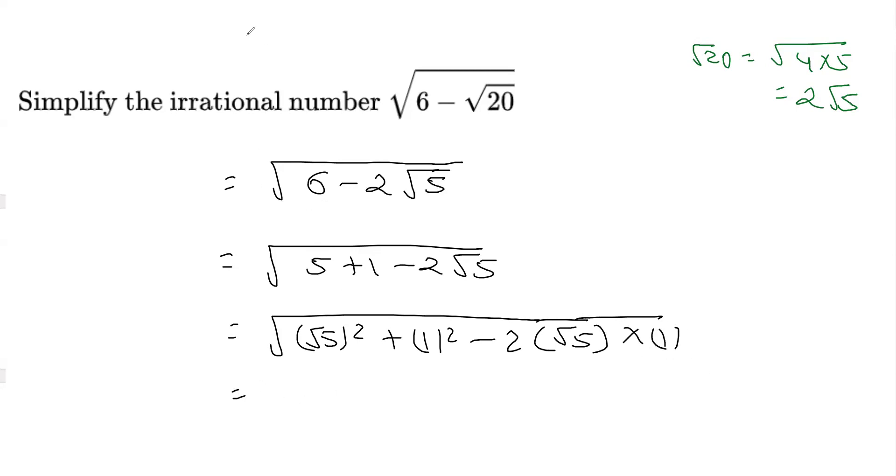Now you can see that considering this to be a and this to be b, we have a square plus b square minus 2 times a into b. So we can write this as a plus b, the whole square.